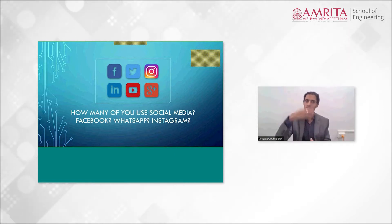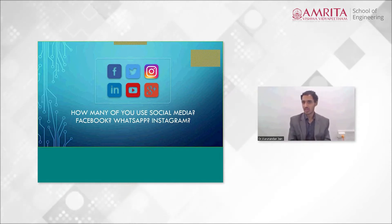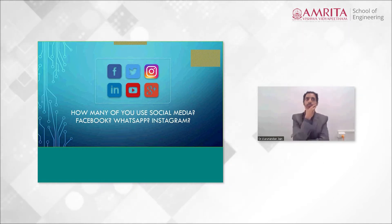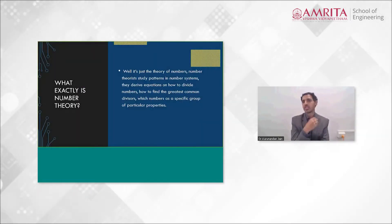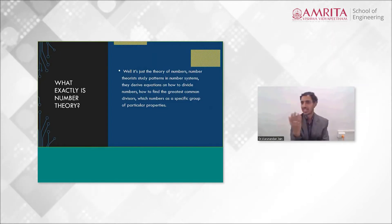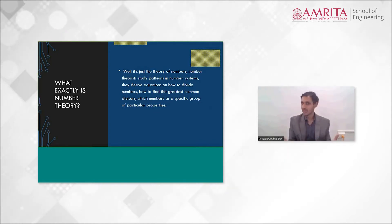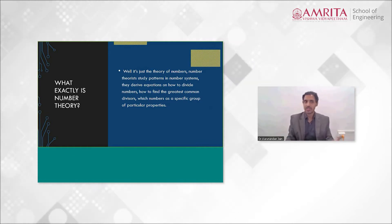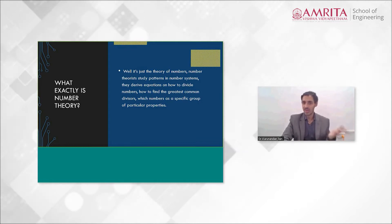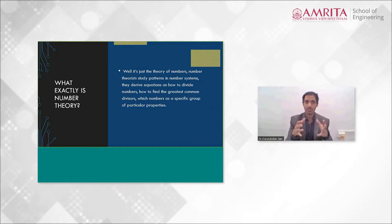Cryptography is the study of keeping messages and images secure. And cryptography uses a field of mathematics called number theory. So what exactly is number theory? It's just what you think it is — it's just a theory of numbers. Number theorists study patterns and number systems. They learn how to derive equations to divide numbers, find the greatest common divisors, and they study a very specific group of numbers. But how are these number patterns used in cryptography?